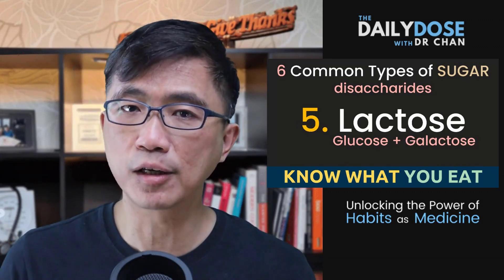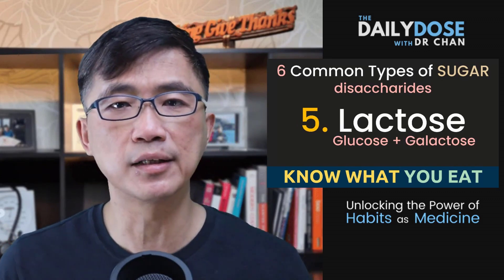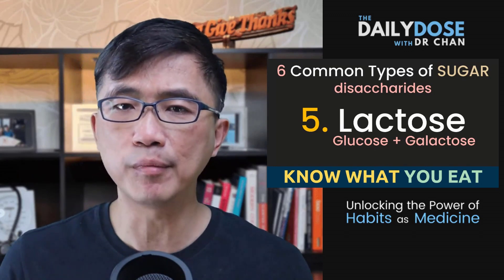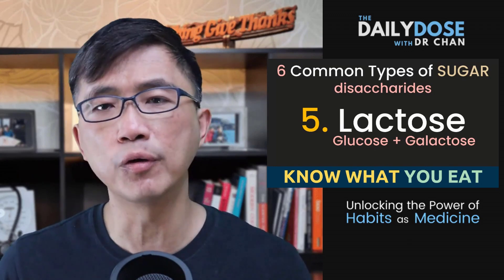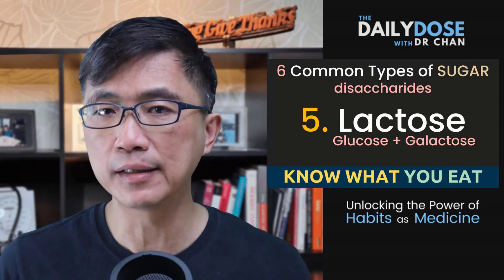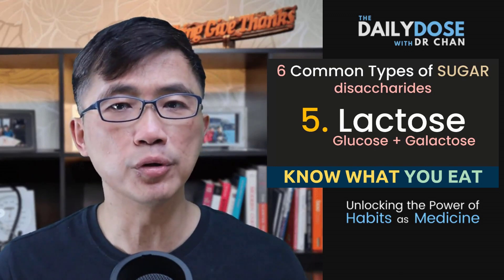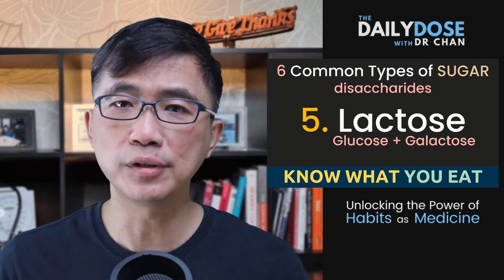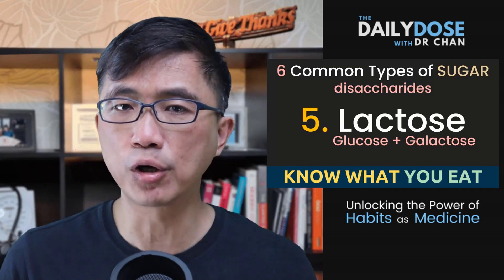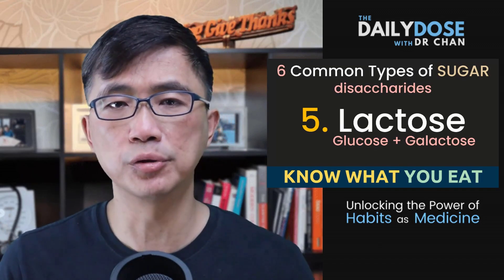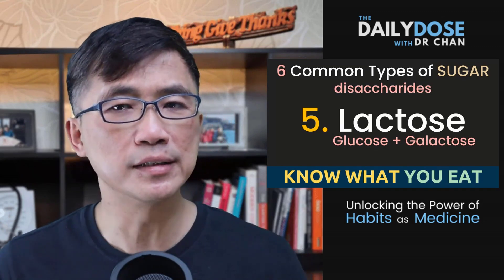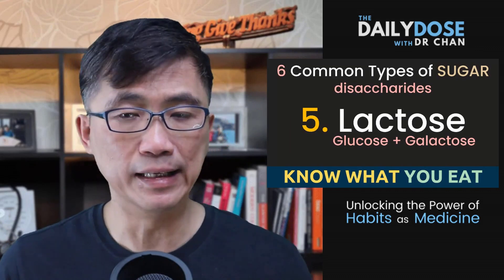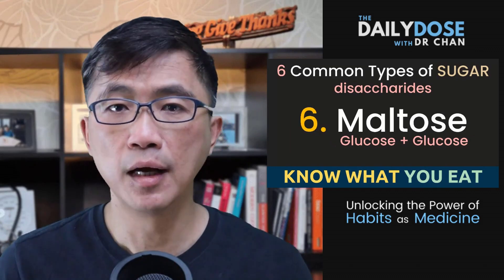Lactose is another common disaccharide that we consume. It is made up of one molecule of glucose linked to one molecule of galactose. Lactose is what we normally call milk sugar, because it is the main sugar found in milk and dairy products.